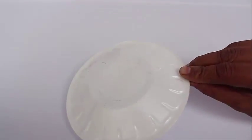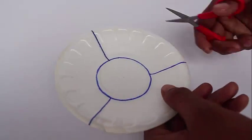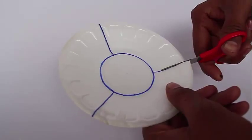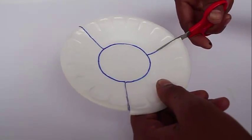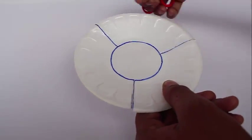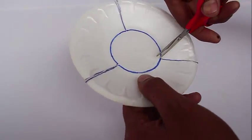Now, first mark the styrofoam plate as shown with a circle in the center and with three large sections on the periphery. Cut along all the blue lines with scissors and you will get three separate sectors and the circle in the center.